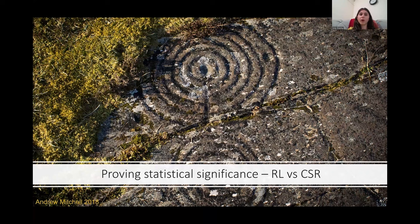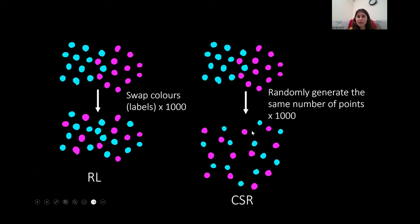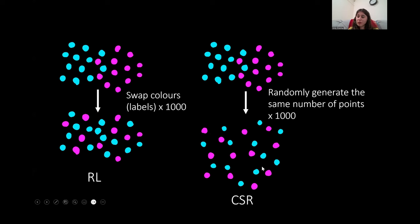Now just a brief note about proving statistical significance. A lot of new papers use a method called CSR or complete spatial randomness to prove that they have achieved a significant result, and this is probably because CSR is built into ArcGIS. CSR involves getting your original point pattern and then randomly generating the same number of points across the study area. Then you can say that your point pattern is more clustered when compared to complete spatial randomness. However this method is good for regular statistics but it's terrible for archaeology because human behaviour is rarely ever random. CSR presumes that all locations in the study area have an equal likelihood of an event occurring, but this is not true.